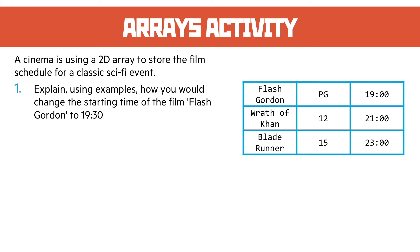Well, it's a 2D array so we need to reference it by the name of the variable. They've not given it so I'm going to call it 'array'. Then it's our row, which is row 0, and then it's index 2 for our column, which is where the time is, and we're going to change it to '19:30' — notice I've put that in quotes to illustrate that's a string.